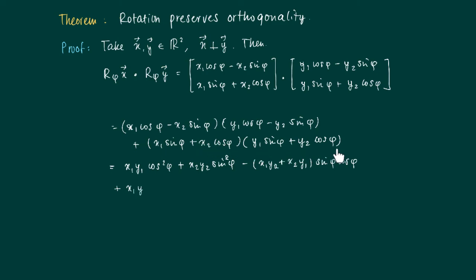Now we're going to work out this expression here. We get x1 sin phi times y1 sin phi, so x1 y1 sin squared phi, plus x2 y2 cos phi squared, plus y1 sin phi times x2 cos phi. This gives x1 y2 plus x2 y1, times sin phi cos phi.